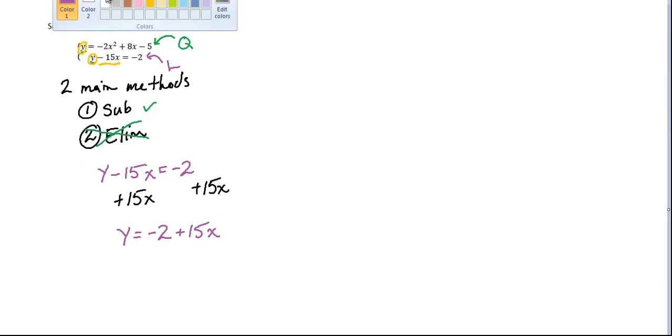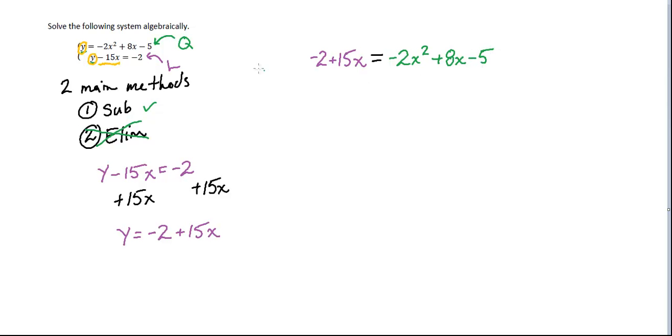And now what I can do is I can actually set these equal to each other now. Because they both have a y in them, right? And the y is by itself. So now what I can just say here is negative 2 plus 15x is equal to my quadratic system. Well, not my system rather, my quadratic equation. It's not a system, it's one. God bless Mr. Mac. It's early and he's not terribly bright.